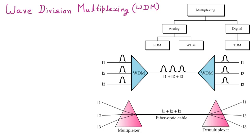Today we are discussing the next type of multiplexing that is called WDM. WDM stands for wave division multiplexing. The name 'wave' comes from the light wave, meaning whenever we are going to combine or multiplex light signals, this is called wave division multiplexing.